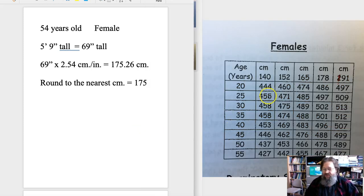Because this chart is in centimeters, we have to convert to centimeters. So the first thing we do is take that 69 inches, multiply by 2.54 centimeters per inch, and we get 175.26 centimeters.